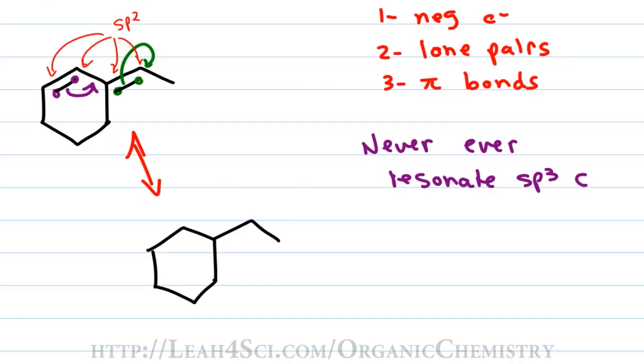To show that this is resonance we put a double headed arrow and then we redraw the skeleton of this molecule and fill in the bonds accordingly. We now have the purple bond sitting one position over and we have the green electrons sitting as a lone pair on a carbon atom.